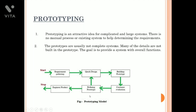This is the block diagram of prototyping model. Requirement gathering, its output is given to quick design. Then, building prototype, customer evaluation. Then, refining prototype, its output is given to again quick design, feedback is given. And one of the other outputs is engineer product. This is about the prototyping model.